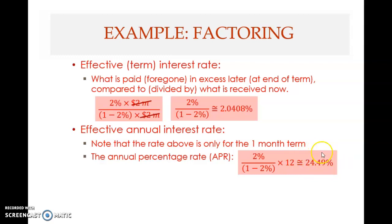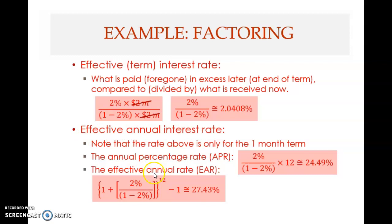That 24.49% is an annual rate - the APR - but we are more interested in the effective annual rate (EAR). The EAR formula is: take r, add one, raise this to the power of 12 (because you compound 12 times - one period equals one month), then subtract one to get the interest rate.